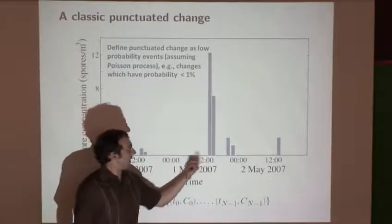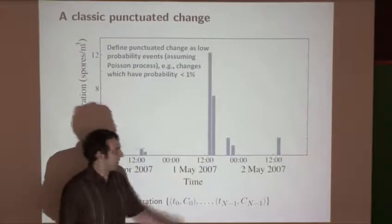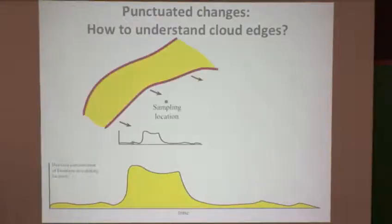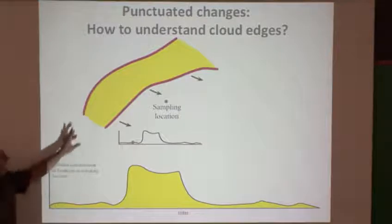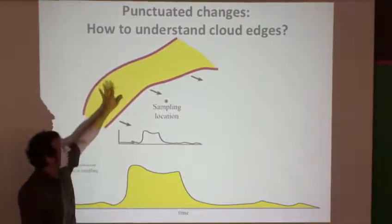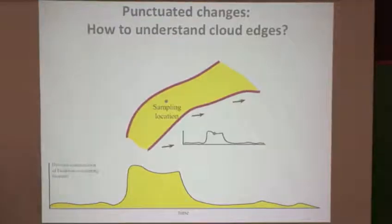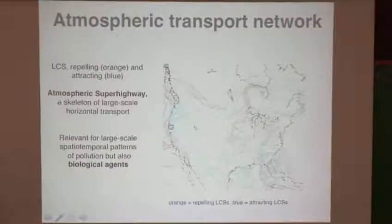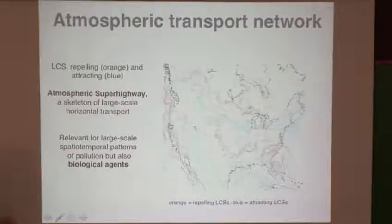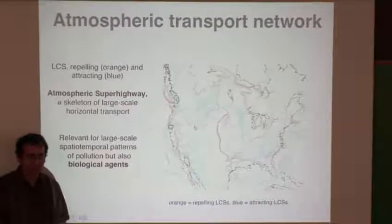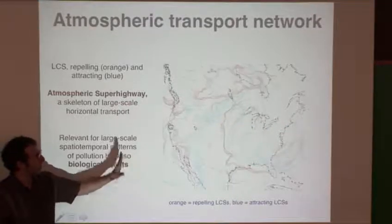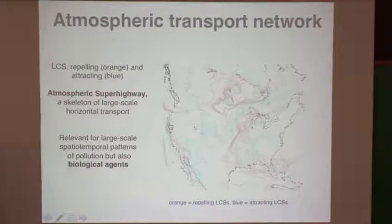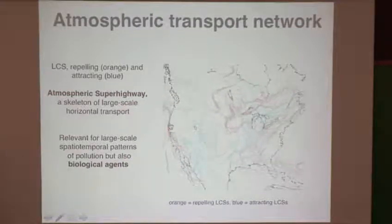We interpret this as a cloud or filament of high concentration passing over the sampling location. As it passes, we get high values, and after it's gone, low values again. What could give rise to this cloud structure? If these microbes are airborne long enough, they may be shaped by atmospheric mixing. This is shown in a movie of forward and backward FTLE ridges — candidate true LCS features, where orange is repelling and blue is attracting — over all of North America.